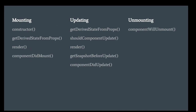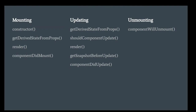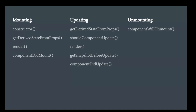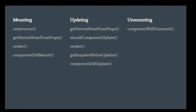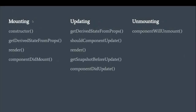You don't need to memorize everything — it will come naturally as you work on projects. Mounting is the initialization of the component. When we enter any component, the constructor is called first — that's the first place to initialize the component. These lifecycle functions are available only for class components, not function components. After the constructor, getDerivedStateFromProps is called. Don't confuse state and props — we will cover those in upcoming slides.